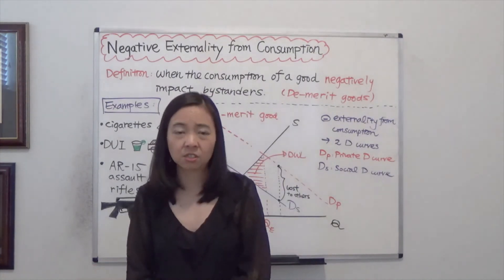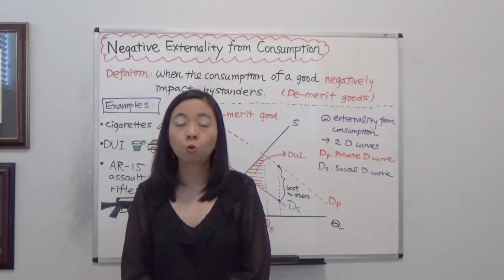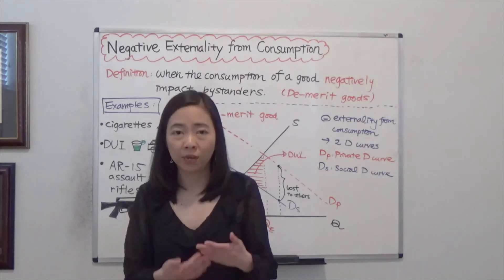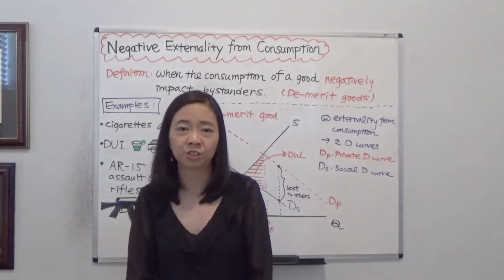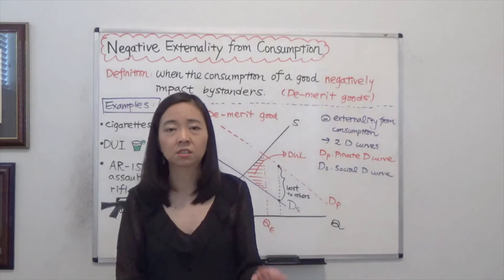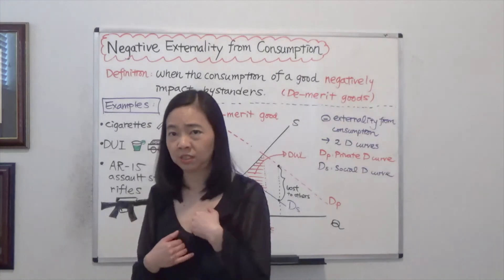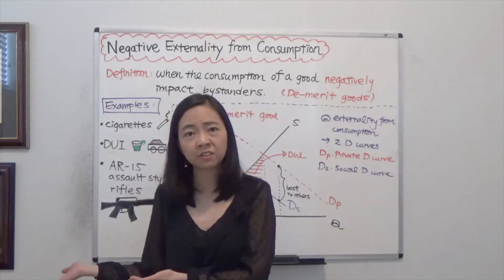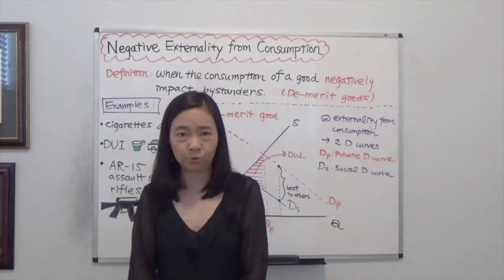Well, because our politicians want to stay in politics. And in order to do that, they need to win elections and they need donations from the gun lobby. And the gun lobby would tell these politicians, make it easier for us to sell our guns to maximize our profit. Otherwise, we are not going to donate to you.